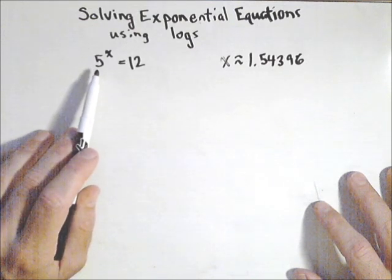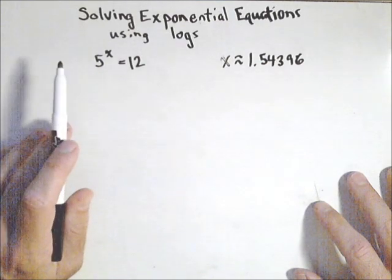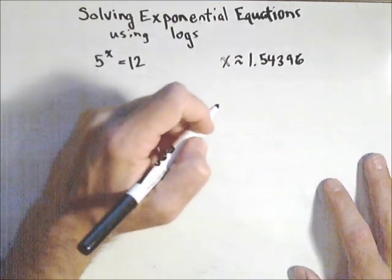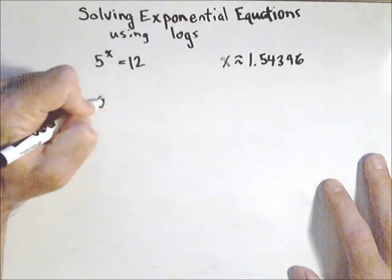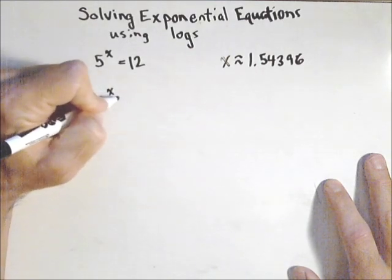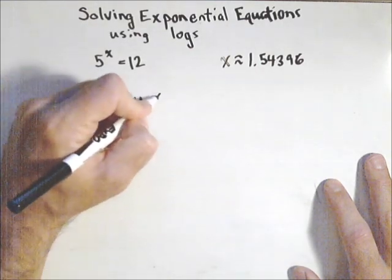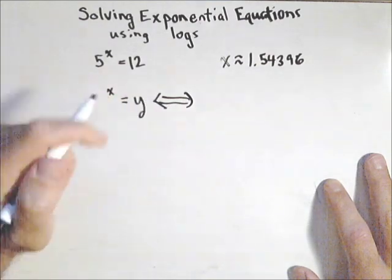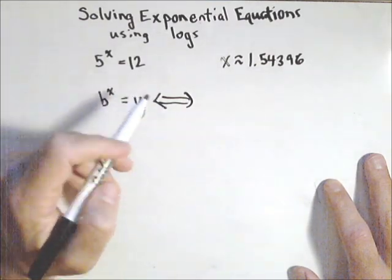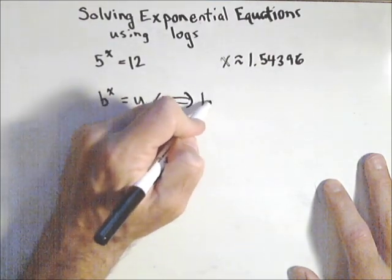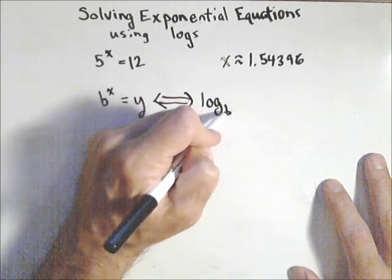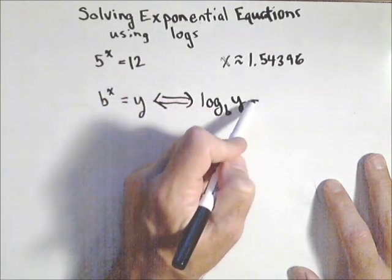One is we can rewrite it using definition of logs. So the definition of logs says, if we have a^x = y, actually let's use b here, we typically use b for base, then we have log base b of y gives us the exponent.